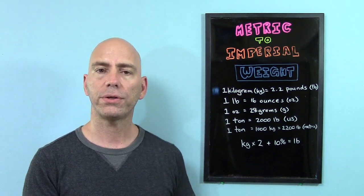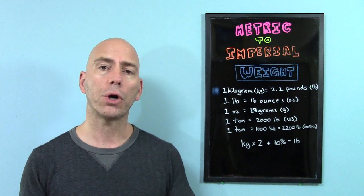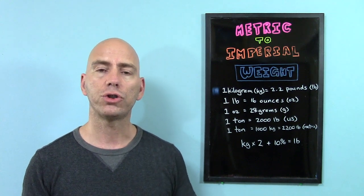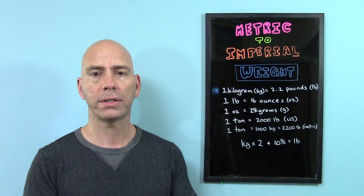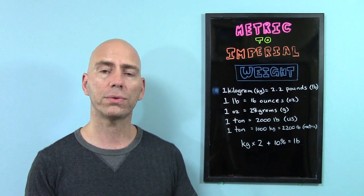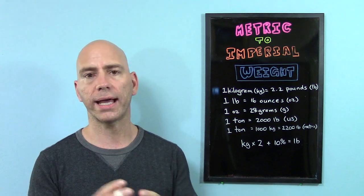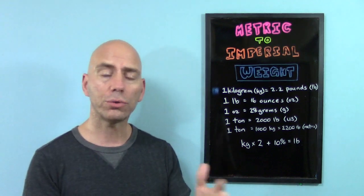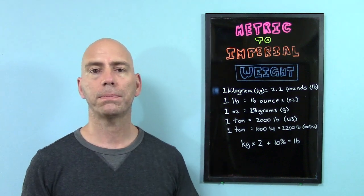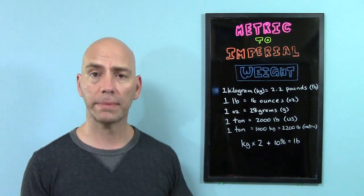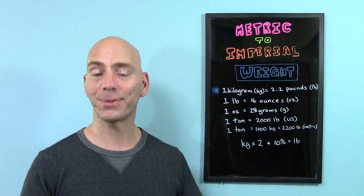If you've ever been to the United States or watched Hollywood movies, then maybe you noticed that people in the United States don't use kilograms, kilometers, and liters to measure things. They use a different system. Grams, kilograms, meters, kilometers, and liters—those units of measure are from the metric system. In the United States, people use the imperial system to measure things.